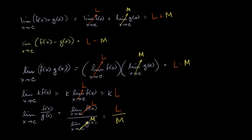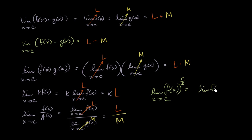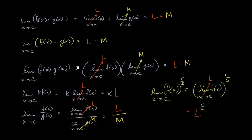Finally, we'll look at the exponent property. The limit of f of x to some power — written as a fractional power r over s, where both r and s are integers and s is not equal to 0 — as x approaches c, is the exact same thing as the limit of f of x as x approaches c, raised to the r over s power, which equals L to the r over s power. Using these properties, we can find the limit of many, many things, and they are the things you would naturally want to do.